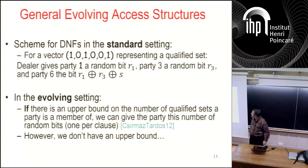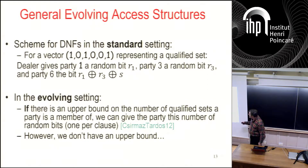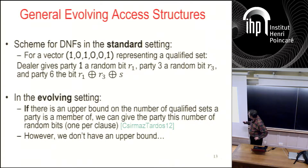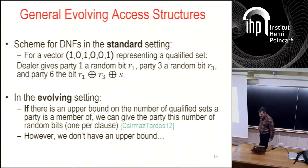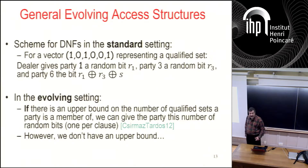How do we do the general access structure? Recall how it's done in the standard setting using the DNF of the access structure. For each vector representing a qualified set — say {party 1, party 3, party last} — the dealer gives party 1 a random bit R1, party 3 gets R3, and the last party gets R1 XOR R3 XOR S. For each qualified set, you give one bit to participants in that set. This works if there is an upper bound on the number of qualified sets a party can be a member of.